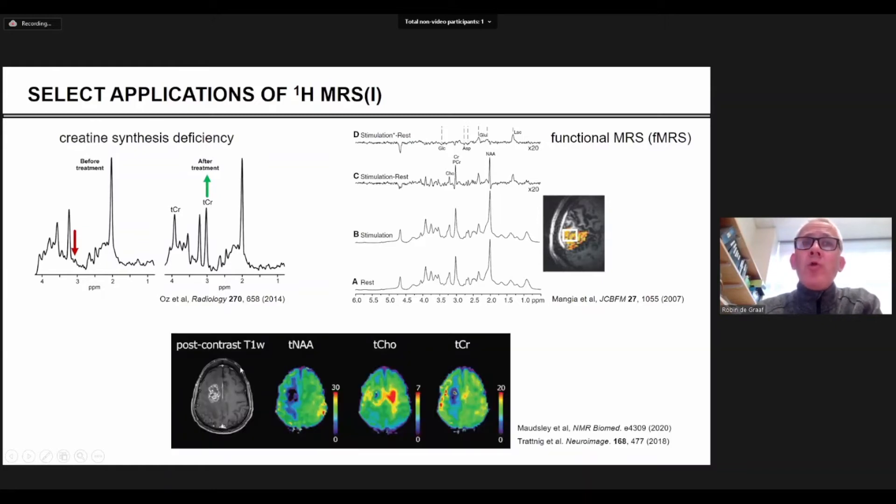You can also do spectroscopic imaging. In this particular example we have a patient with a brain tumor. In spectroscopic imaging you get a spectrum from every one ml volume, so every location has a spectrum like this. You can quantify the NAA signal and then display that as an image. And you can do the same thing for choline and creatine etc. And then you can see in this case the NAA has clearly decreased at this location.